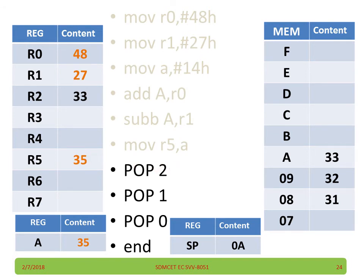Pop 2 means stack pointer is 0A: 0A content, which is 33, will be moved to R2 and again SP will be decremented by 1. Now pop 1 you are executing: when you execute pop 1, SP 09 content will go to R1 and SP is decremented by 1.